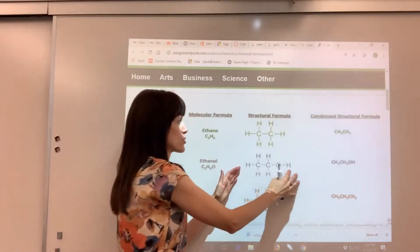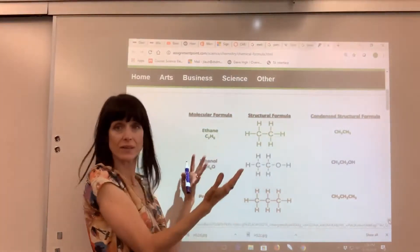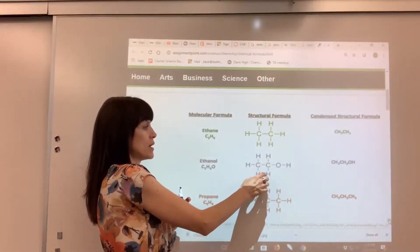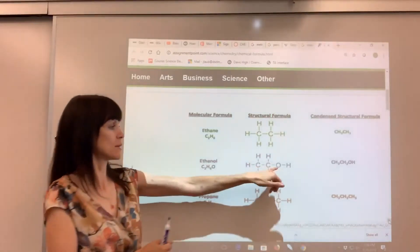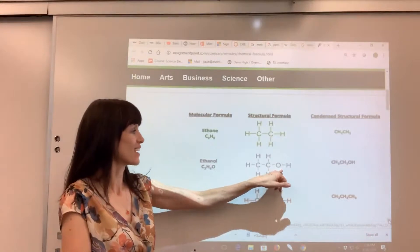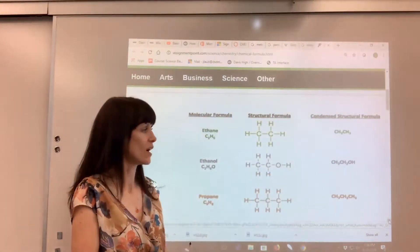So here's our structural formula, trying to draw out what this looks like. The two carbons are bonded together, a hydrogen around each carbon, all four sides of the carbon, except for over here on the right-hand side, there's the oxygen. There's the oxygen with that hydrogen. That's the alcohol group.